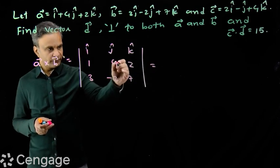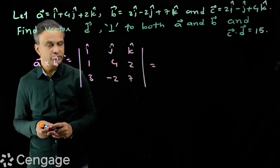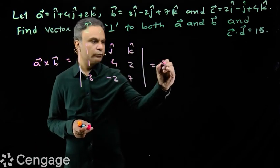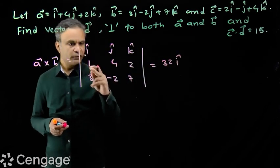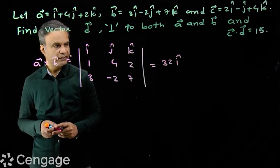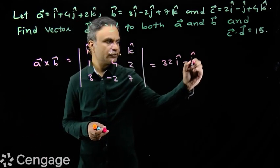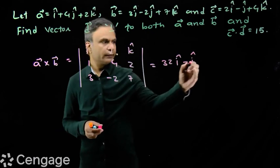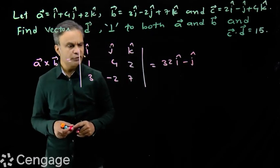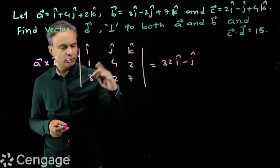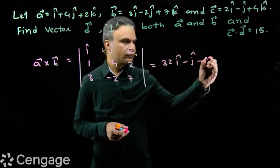So this will be, we have here 28 plus 4, which is 32, so 32i. Then we have 7 minus 6, so we have minus j. And coefficient of k will be minus 2 minus 12, which is minus 14.